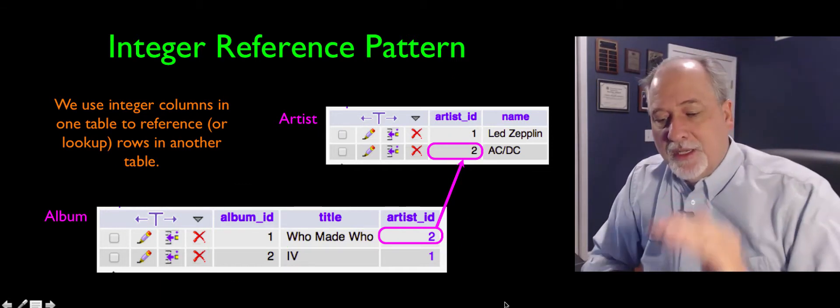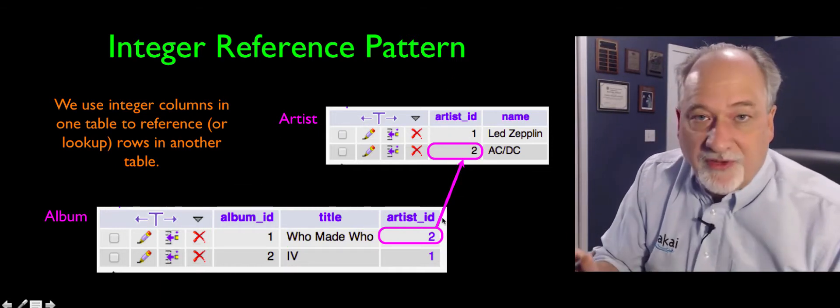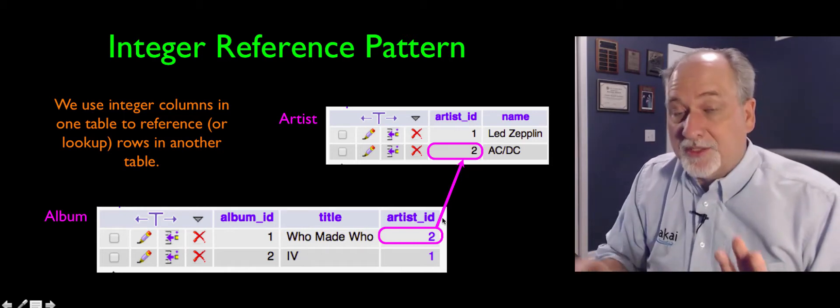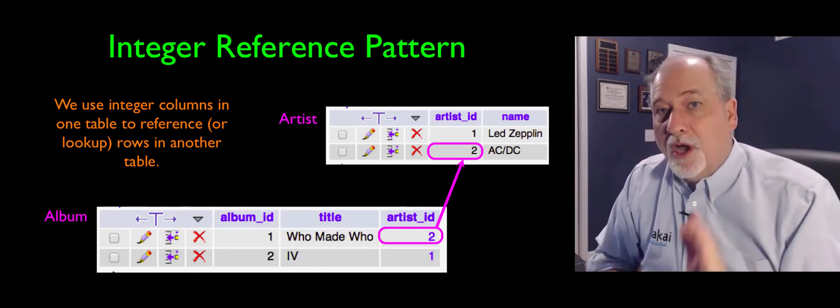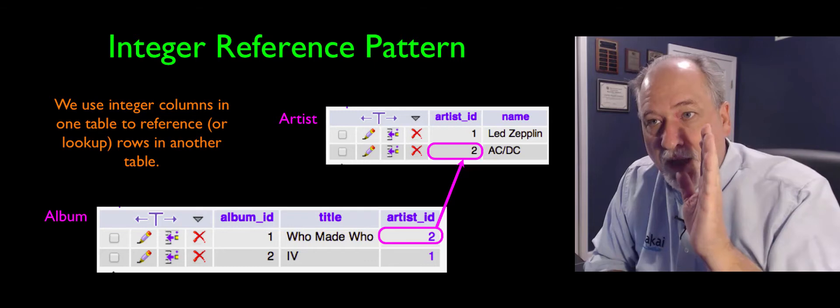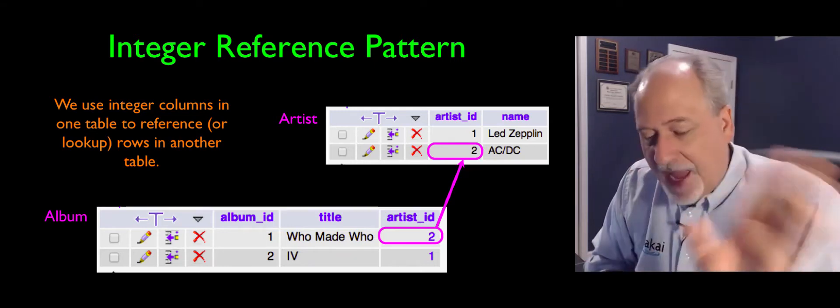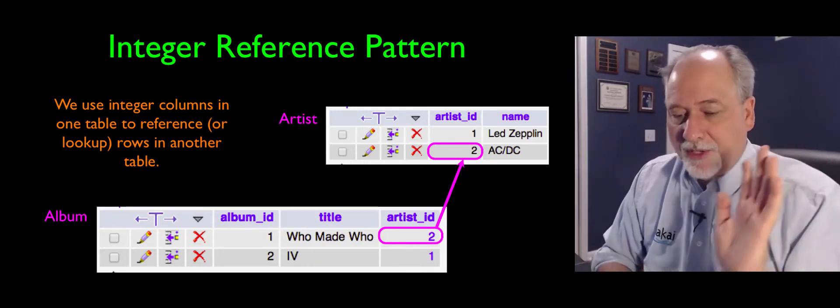So the idea is we can replicate these numbers very efficiently. Put them all over the place, replicate them as many times as we want. Because numbers are short, highly compressible, fast. All kinds of good things about numbers.